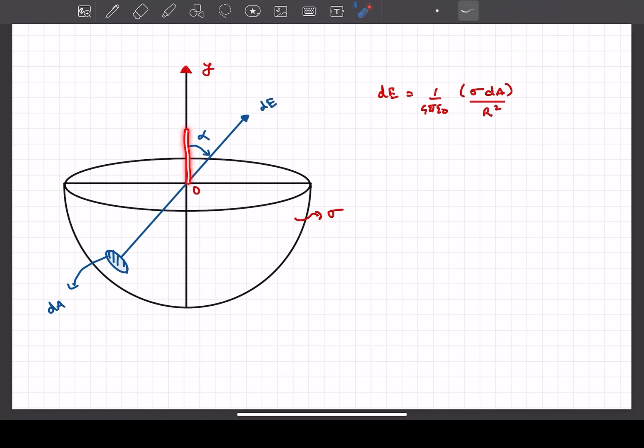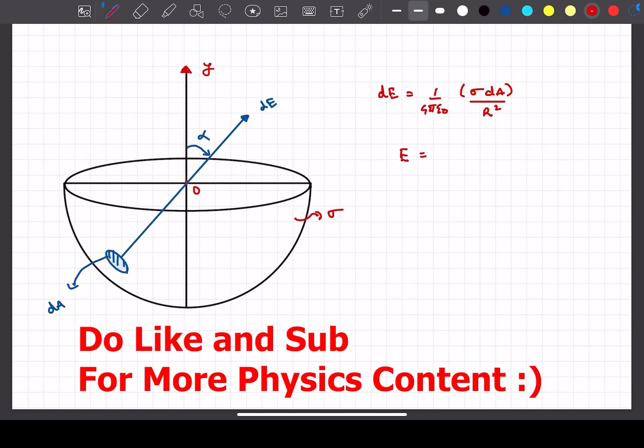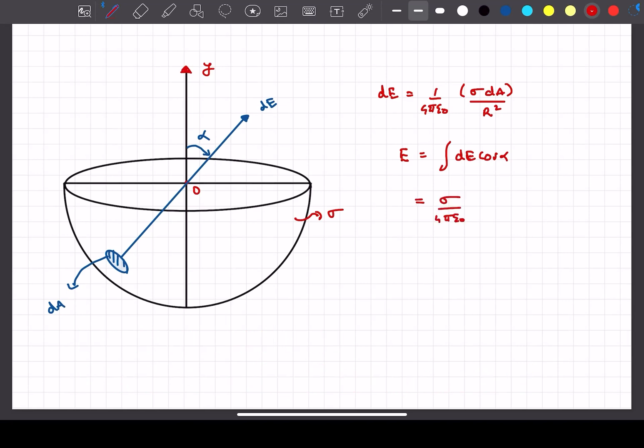Now as we only have to sum up all the components along the y-axis, the net electric field is simply going to be the integral of dE cos alpha, because that's the component along the y direction. If you simplify the expression a bit, you'll get sigma by 4 pi epsilon naught r squared times integral of dA cos alpha.